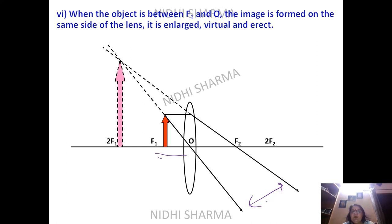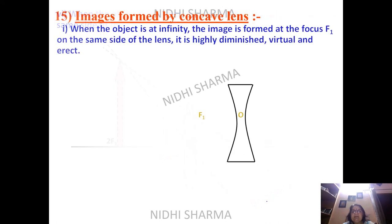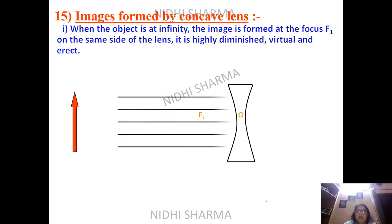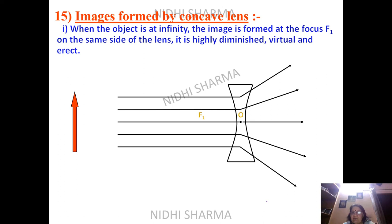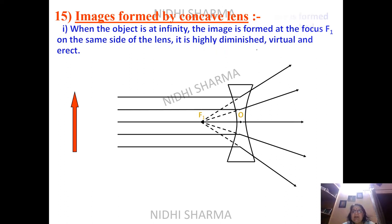These are all six cases for a convex lens. Now for image formation by a concave lens. Parallel rays from infinity are diverged by the lens and meet on the virtual focus. So when the object is at infinity, you get a highly diminished, virtual, and erect image.